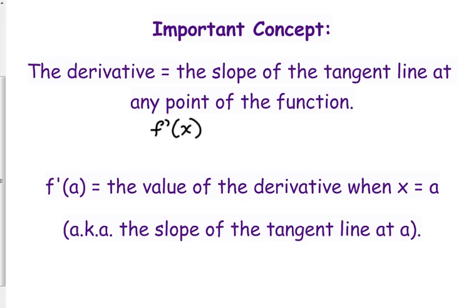The derivative equals the slope of the tangent line at any point of the function. So that's just in general. The derivative is the slope of the tangent line at any point of the function. That's just f prime of x. f prime of a is the value of the derivative at a specific point, which is the slope of the tangent line at a specific point.